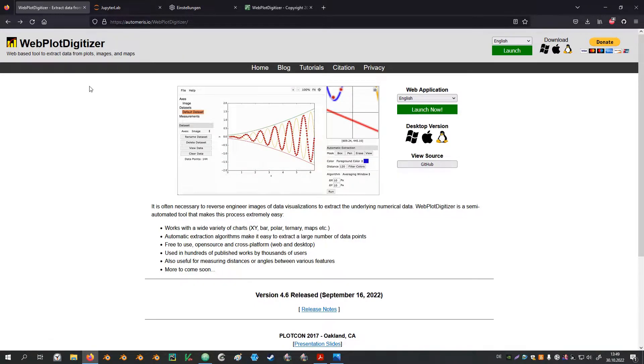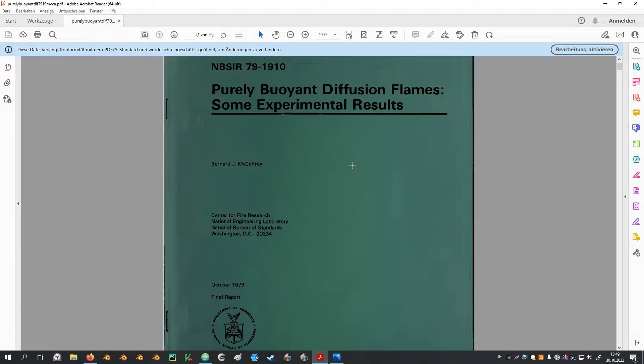The open source tool WebplotDigitizer can be used for this. As an example we will extract a couple of data points from this scanned report here. The links to both of them are in the video description.